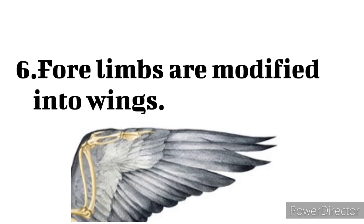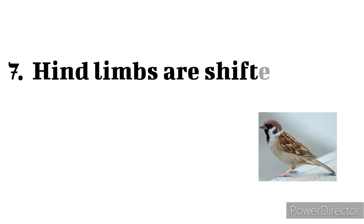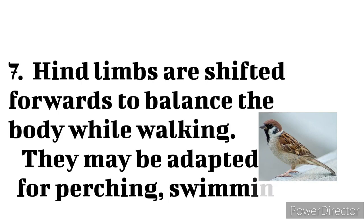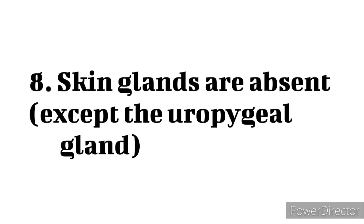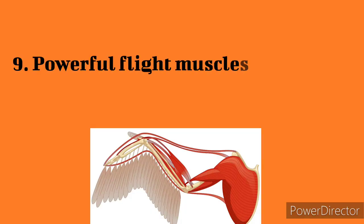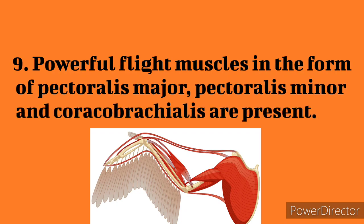6. Forelimbs are modified into wings. 7. Hind limbs are shifted forwards to balance the body while walking. They may be adapted for perching or swimming at sea. 8. Skin glands are absent, except the uropygial gland. 9. Powerful flight muscles in the form of pectoralis major, pectoralis minor, and coracobrachialis are present.